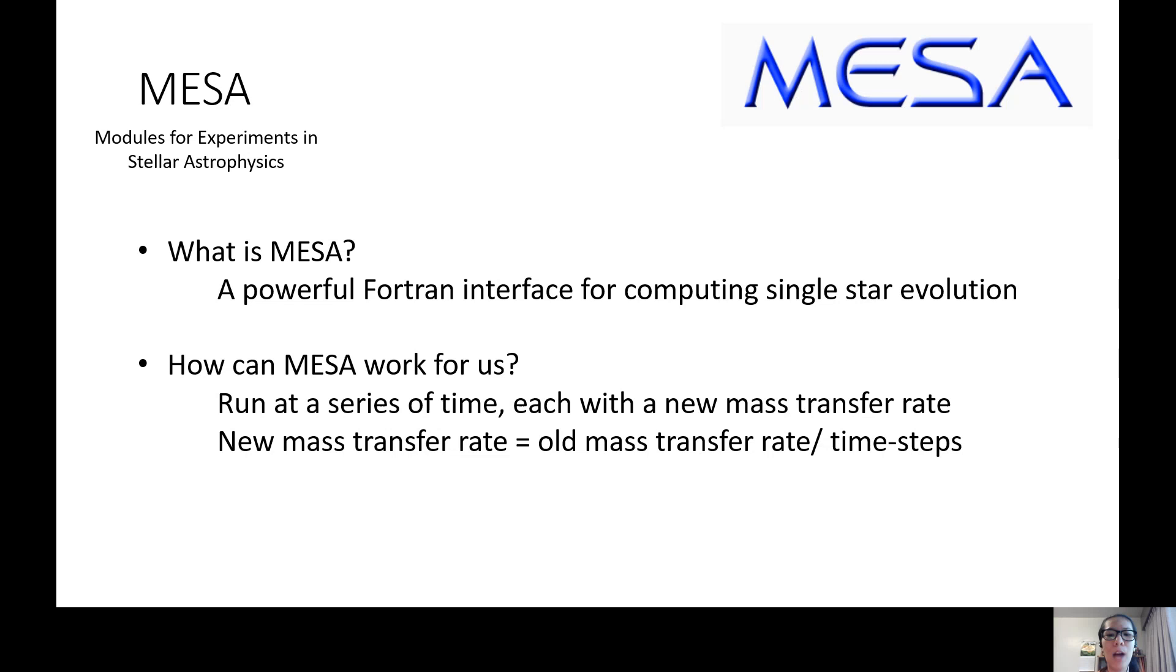To compute the structure of the primary star, we use MESA, Modules for Experiments in Stellar Astrophysics. MESA is a powerful Fortran code for computing single star evolution. By using nuclear power generation, hydrostatic and thermal equilibrium, MESA is able to calculate the exact interior structure of a star.